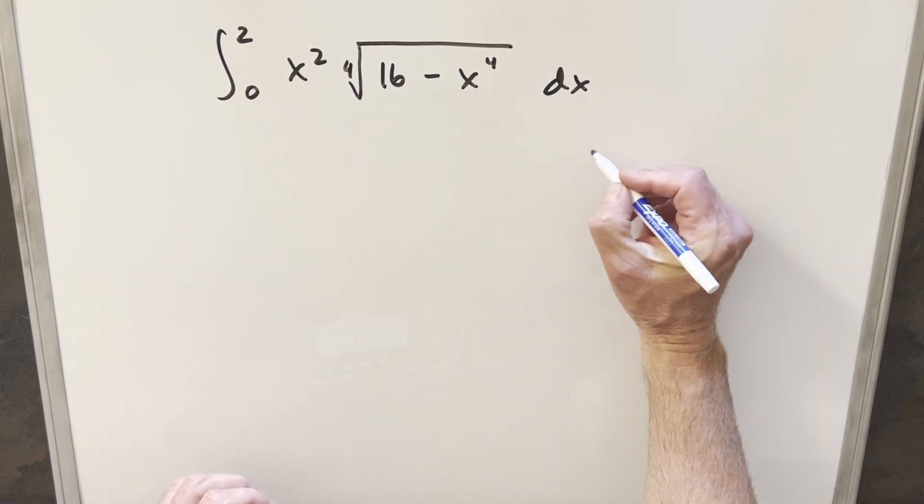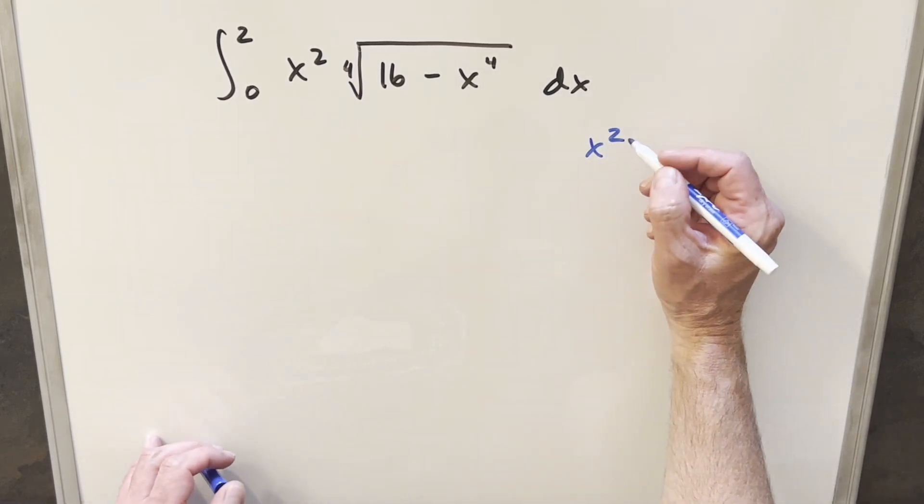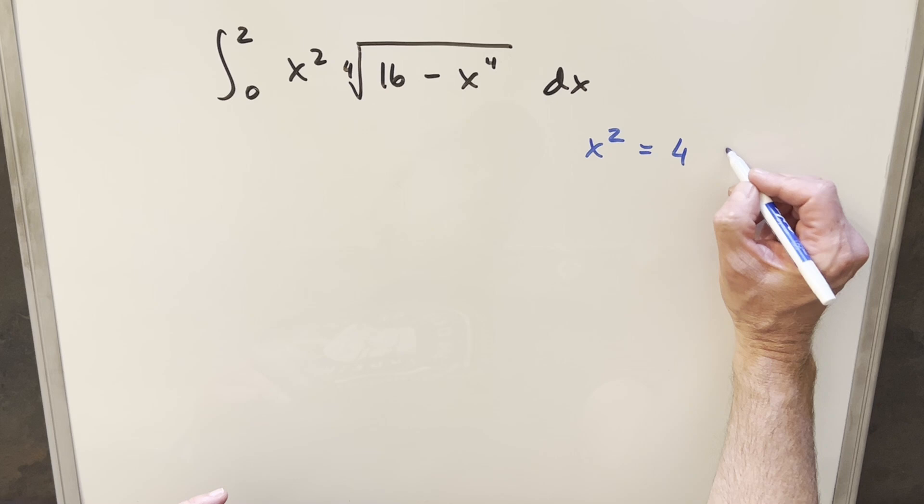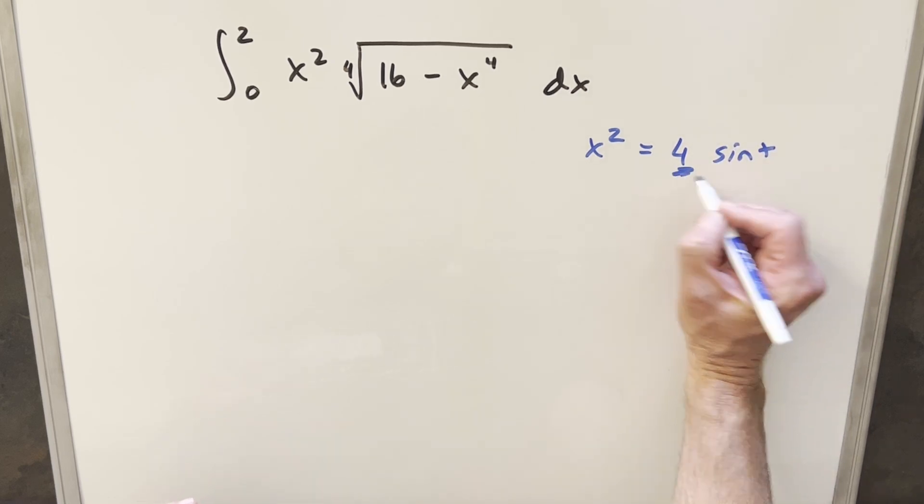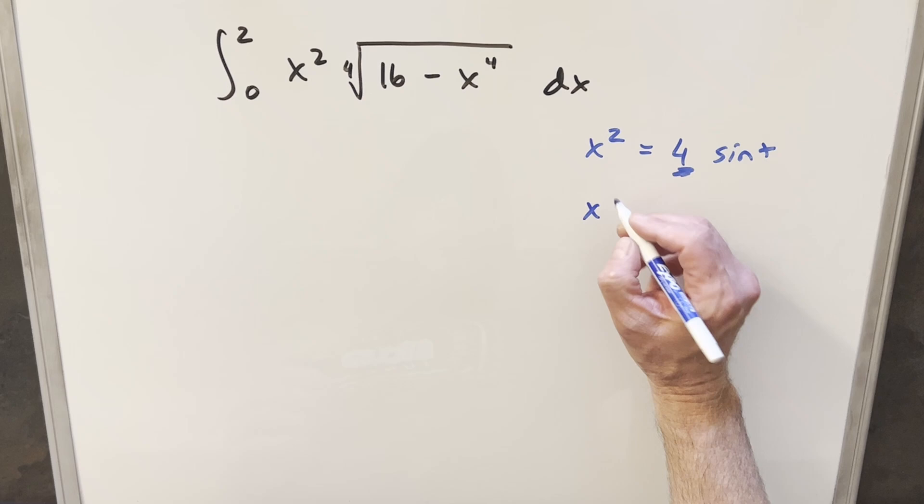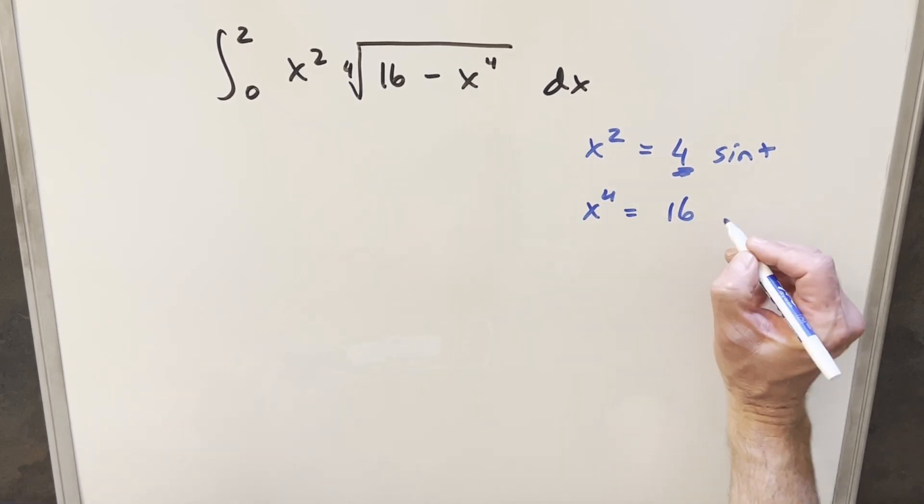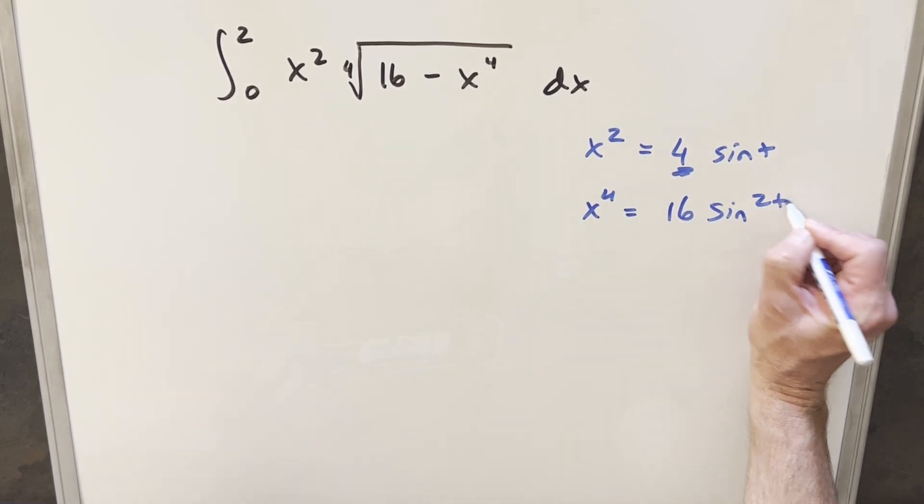So what I want to do for this for my trig substitution is let's just call x squared equal to 4 sine of t. I've created that 4 there in order to work with the 16. If it's doing this, you'll just notice to make it clear for our x to the fourth value, this is going to be 16 sine squared t.